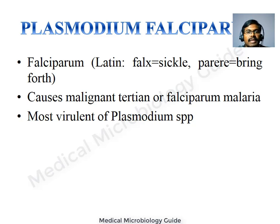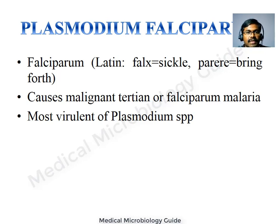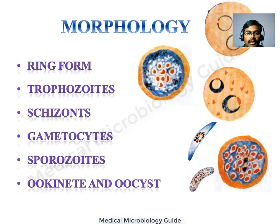We will now focus our discussion on Plasmodium falciparum. The word 'falciparum' is derived from Latin: 'falci' means sickle, 'parum' means bring forth. This causes malignant tertian or falciparum malaria. It is called tertian malaria because the fever occurs once every 48 hours — if the fever is today, it recurs on the third day. Because it is associated with more complications, it is called malignant. Among all malarial parasites, P. falciparum is the most virulent.